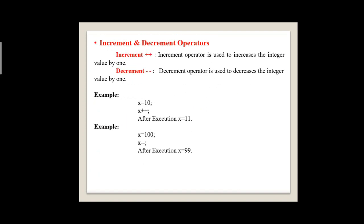Next, increment and decrement operators. The increment operator is ++ and the decrement operator is --. The increment operator increases the variable value by 1 and the decrement operator decreases it by 1. For example, if x = 10 and we apply x++, the value of x becomes 11. Another example: if x = 100 and we apply x--, the value of x changes to 99.